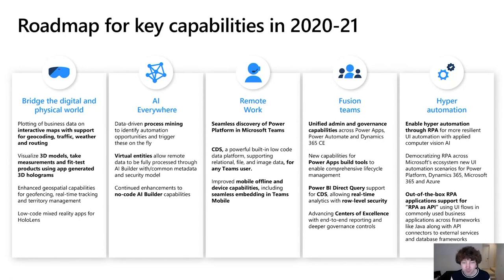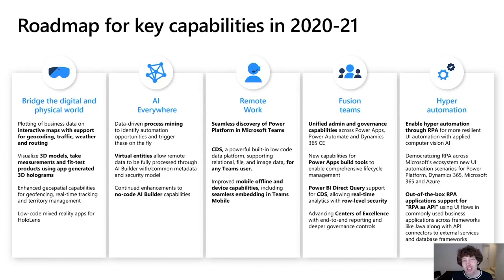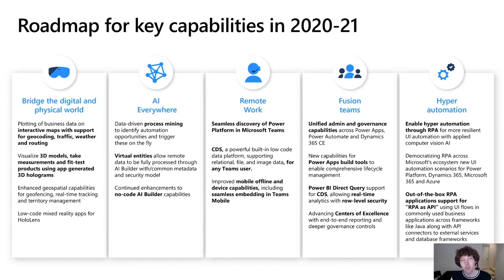For that first focus area, we're bringing more mixed reality, augmented reality, and geospatial awareness. For AI everywhere, we're injecting artificial intelligence as you build workflows and automations. For Teams, we're making it the best canvas and collaboration place for remote workers with first-class Power Platform experiences. For fusion teams, that's pro devs and citizen devs working together using Azure API Management, data integration, Azure Data Lake, Azure AI, T-SQL endpoints, and SQL Server Management Studio on top of Common Data Service. And lastly, hyper-automation — the power of robotic process automation combined with artificial intelligence will be one of the most important democratized capabilities inside the Power Platform over the next few years.